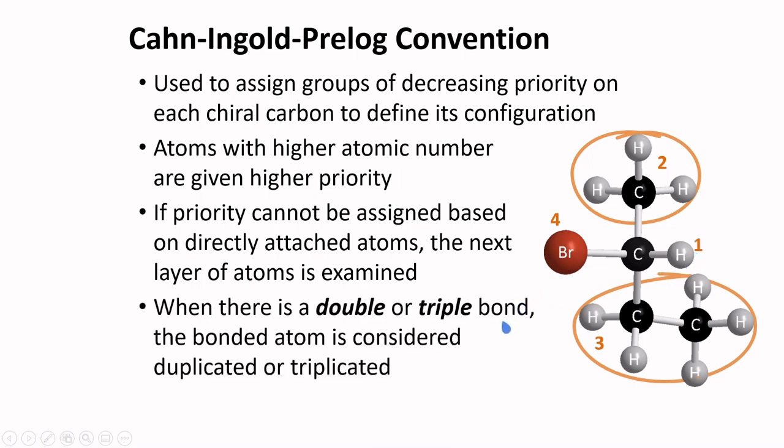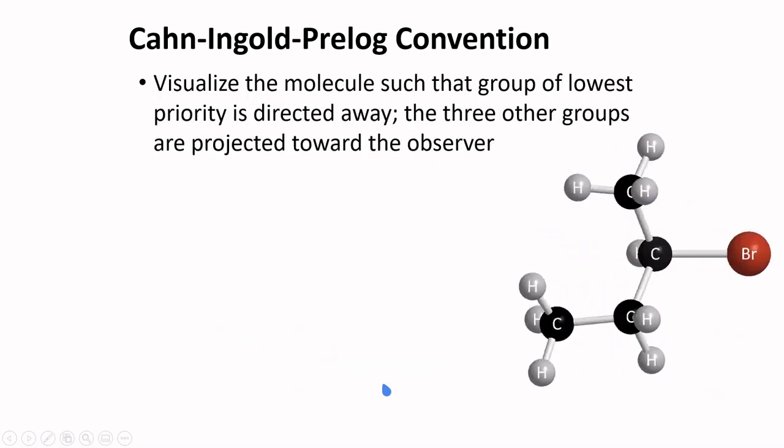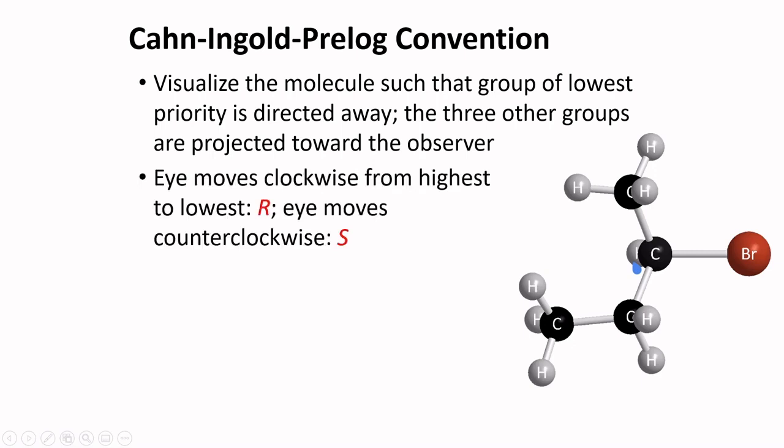When there is a double or triple bond, the bonded atom is considered duplicated or triplicated in a similar way as the number of bonds found in the group. Next, you need to visualize the molecule such that the group of lowest priority is directed away. In this case here is hydrogen. The three other groups are projected toward the observer. Starting from the group of highest priority, here Br, we imagine a rotation going from the highest towards the lowest. And if this rotation is clockwise, we designate this chirality center as R.